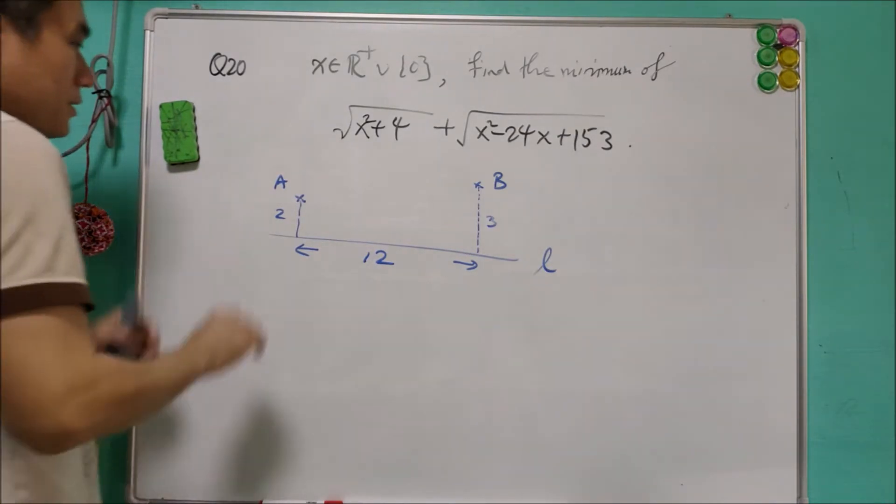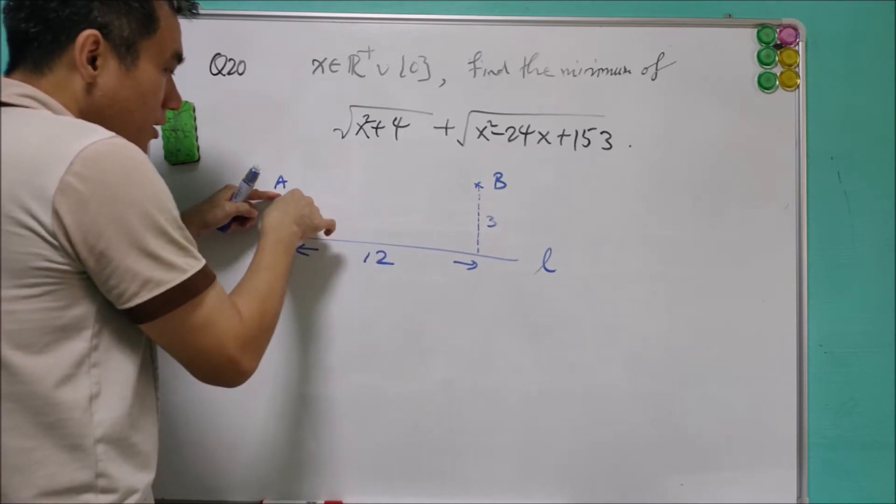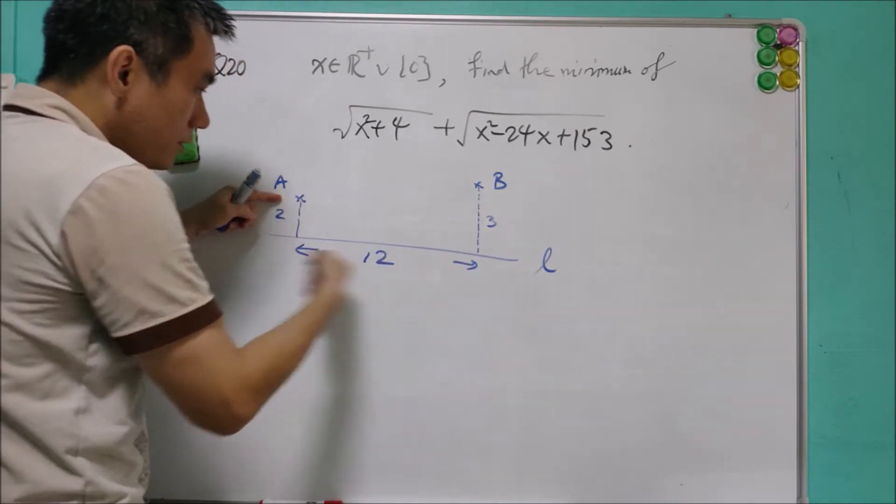You are asked to find the minimum distance from A to B with the condition that you have passed through some point on the L.